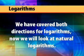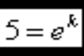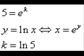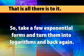Now we will look at natural logarithms. Let us look at this problem: 5 equals e to the k power. Again we use the basic formula y equals natural logarithm of x if and only if x equals e to the y power. We see that x is 5 and y is k, so we have k equals ln of 5. For our last problem, 7 equals ln of k — to put that into exponential form we see x is k and y is 7, so we have k equals e to the 7th power.